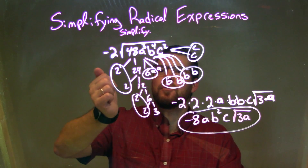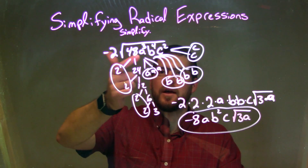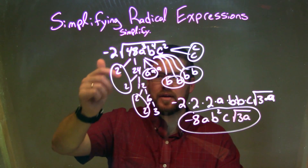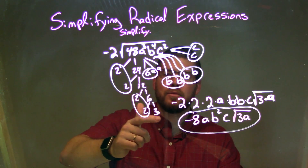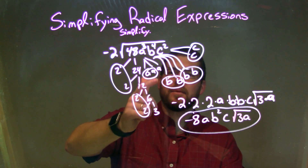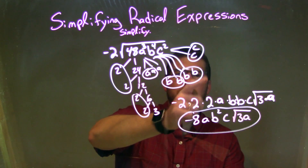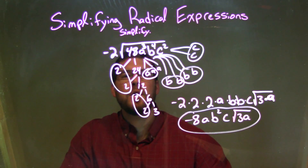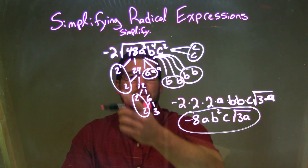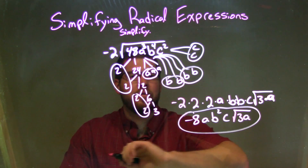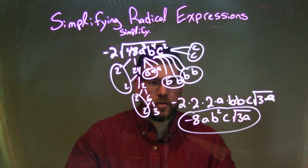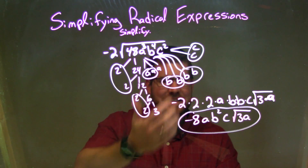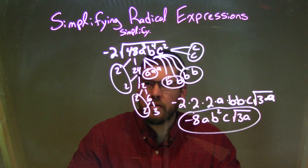So let's recap. We're given negative 2 times the square root of 48a to the third, b to the fourth, times c squared. That breaks down to be 2 times 2 times 2 times 2 times 3, times a times a times a, times b times b times b times b, times c times c. From there, we circle our pairs: two pairs of twos, one pair of a's, two pairs of b's, and one pair of c's. Every pair is represented by a single element outside of the square root.